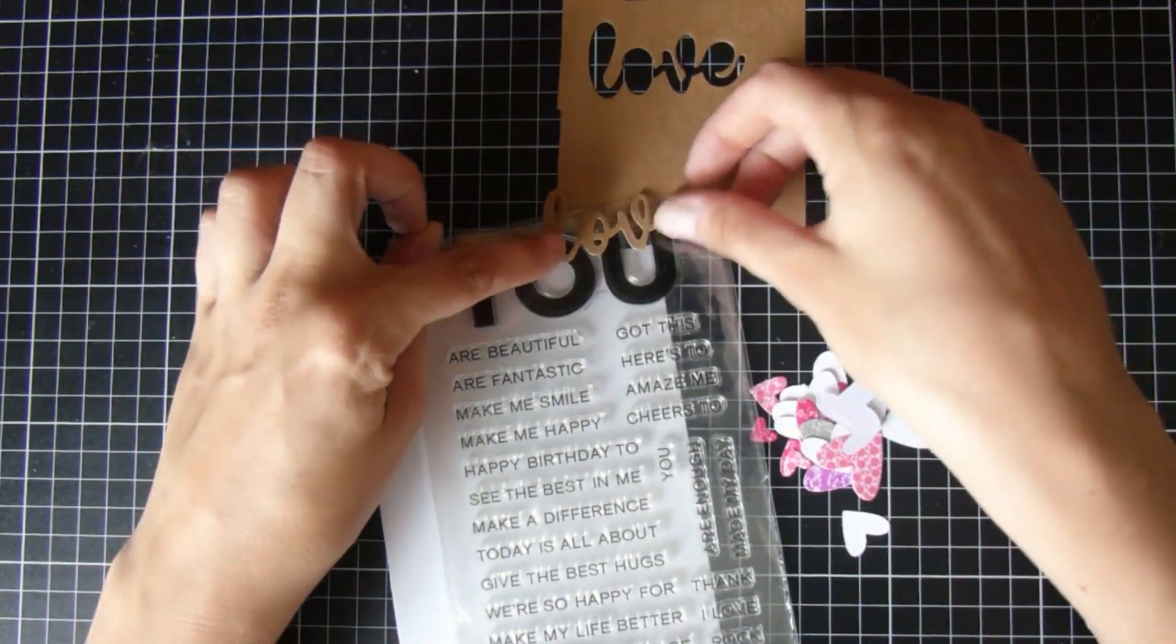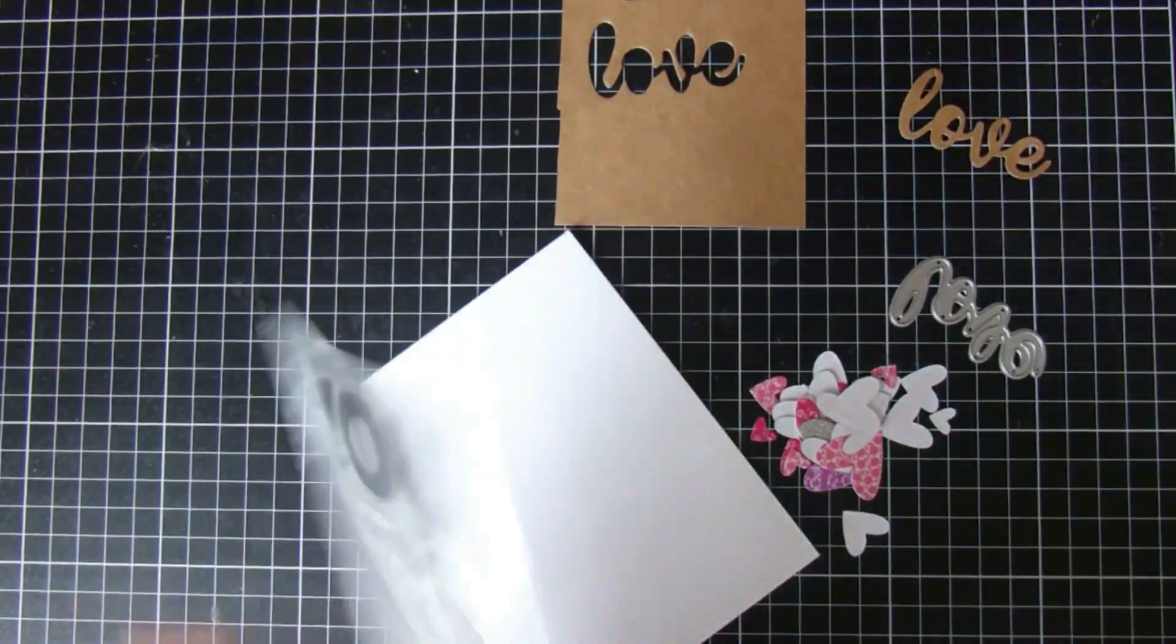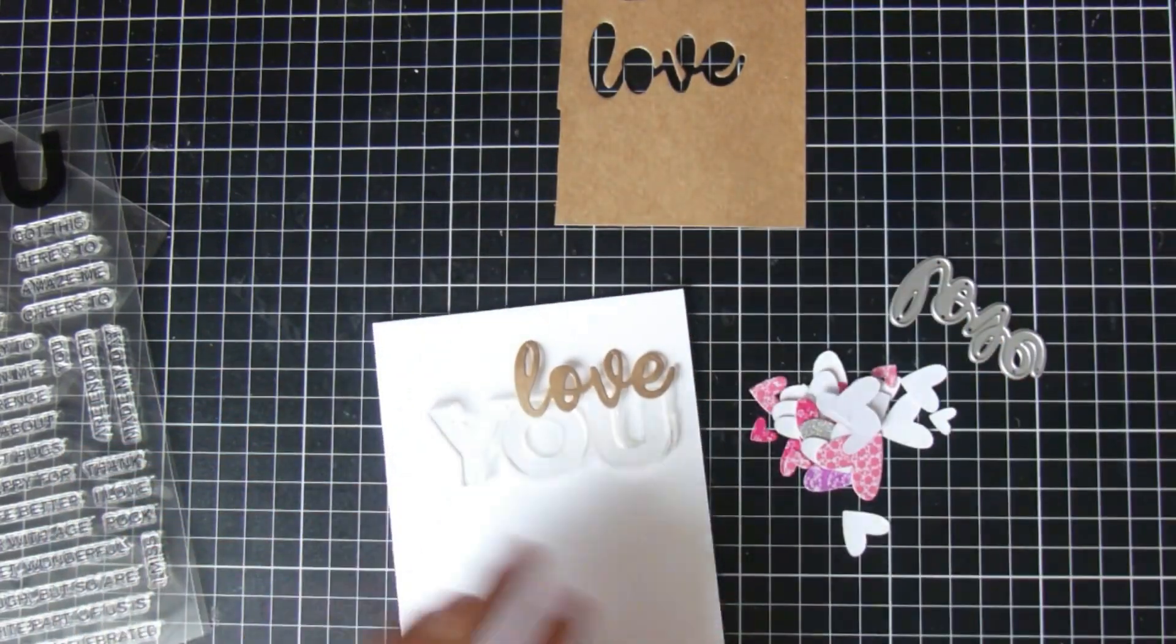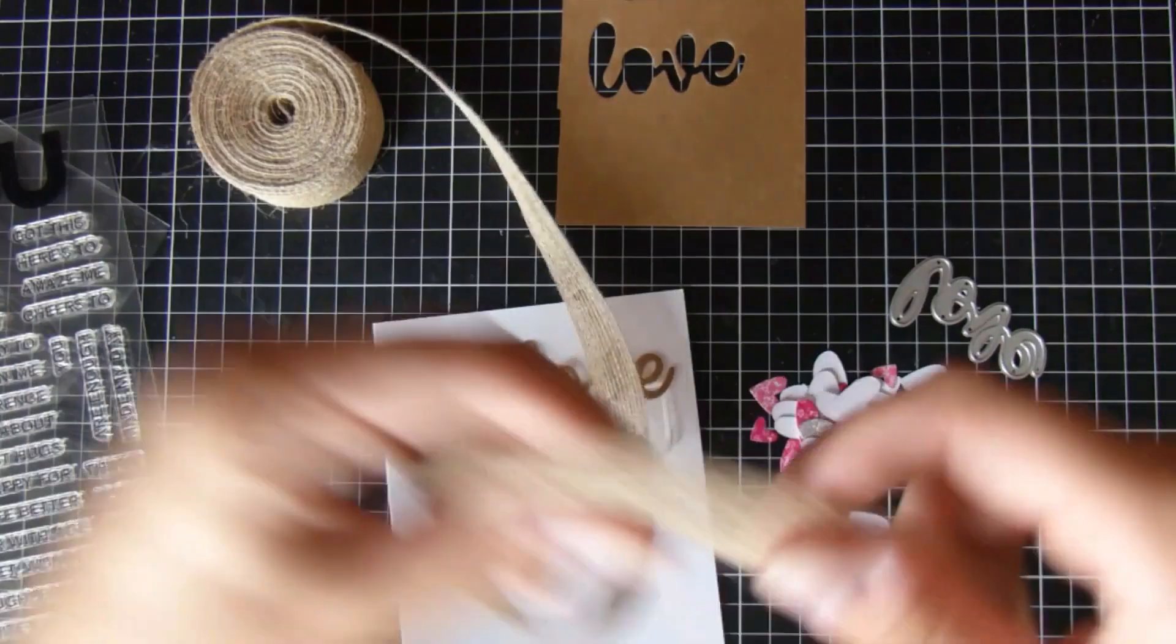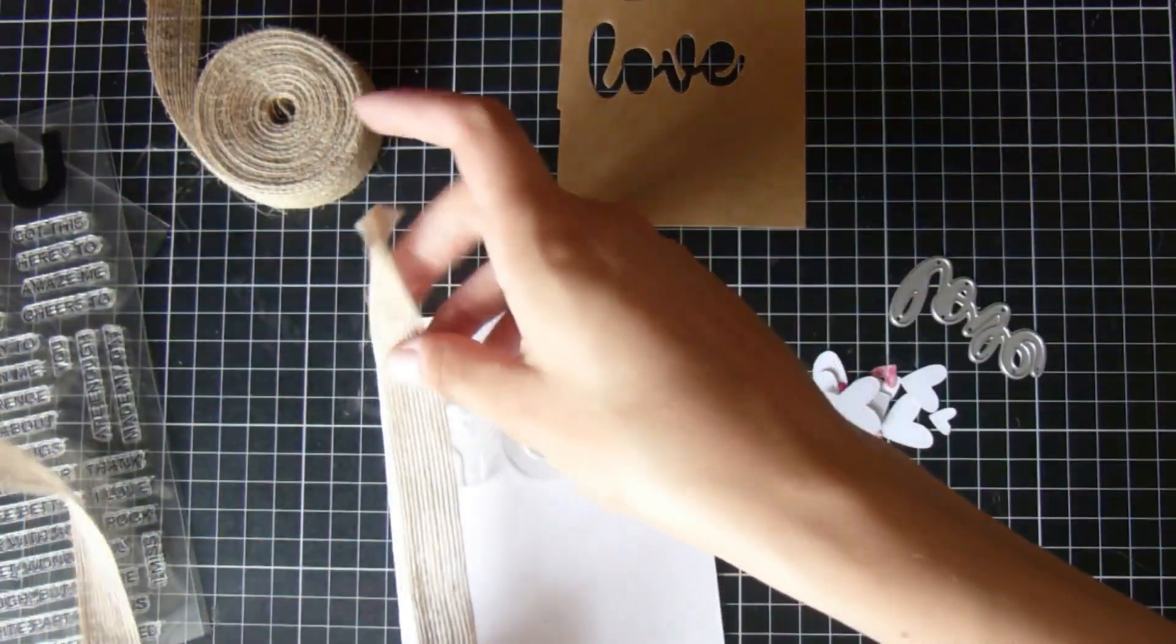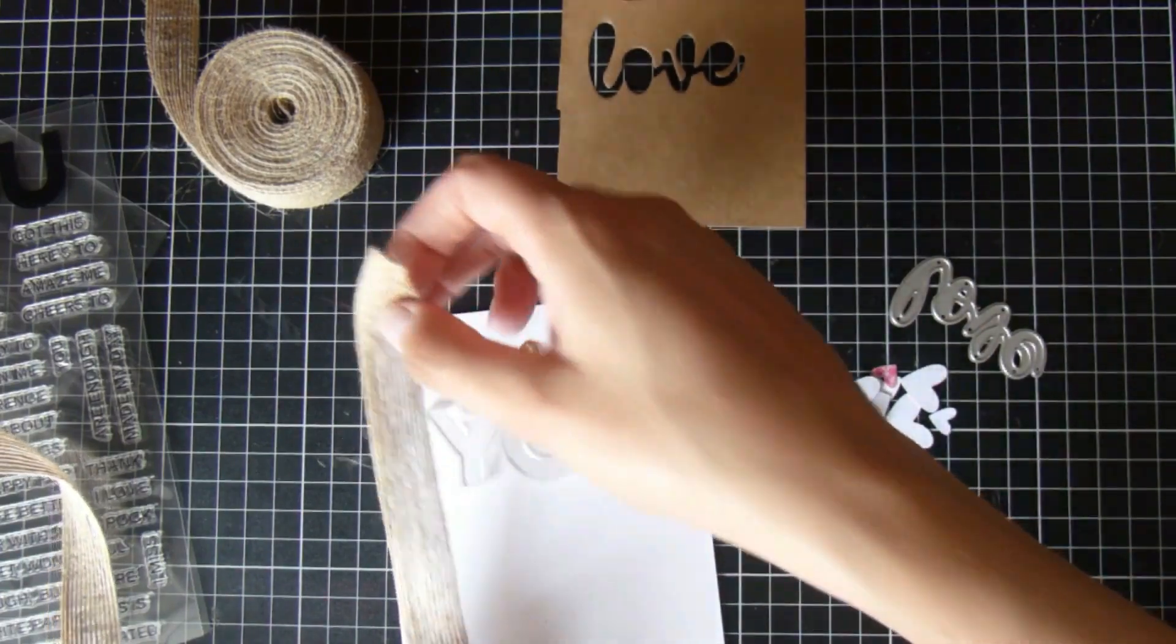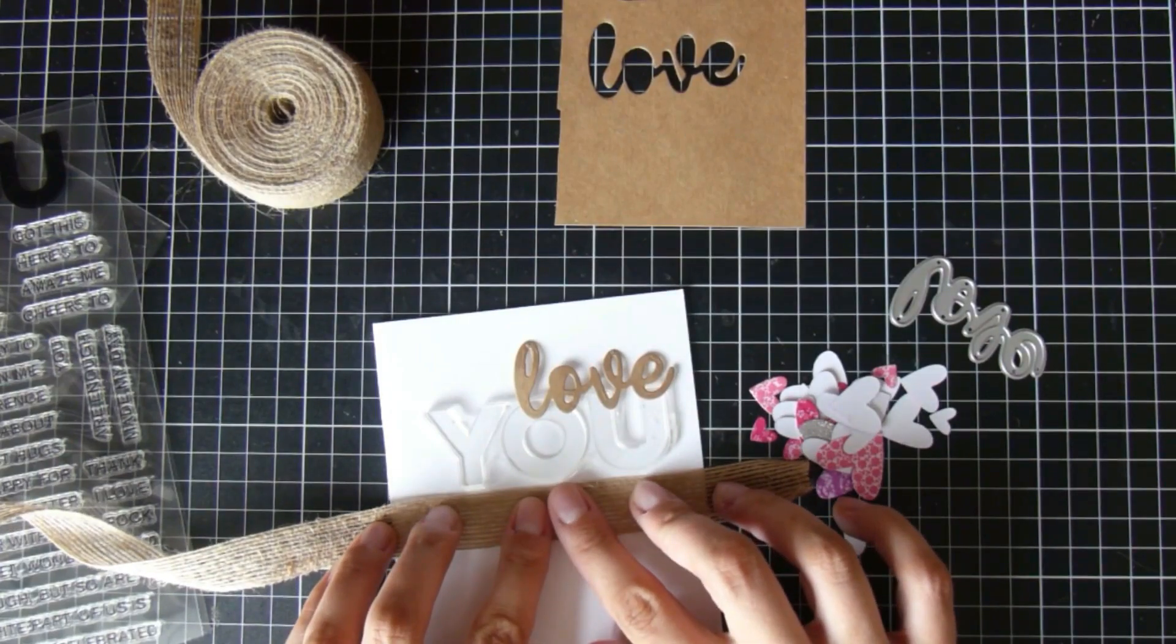So I'm going to do a 'love you' card, and I want the love to be at the top. I've just cut that out in craft cardstock, and then the 'you' I am going to stamp on the cardstock. I'm just placing it all out here to see how I want it to go. I also have some burlap ribbon which I purchased from AliExpress, and I'm just deciding if I want it to go vertical or horizontal across the card. I think I decide on horizontal in the end.